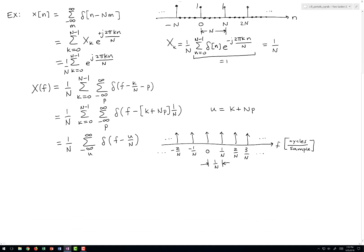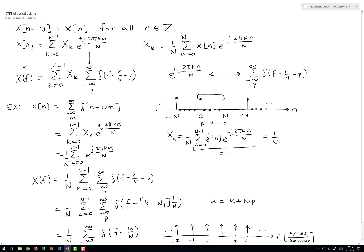So just to review, what we've found is that the easiest way to compute the Fourier transform of a periodic signal is to expand that signal in a Fourier series, as shown here, and then to just take the Fourier transform of the Fourier series representation.